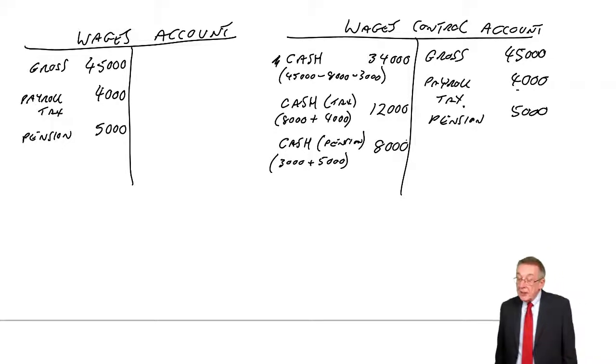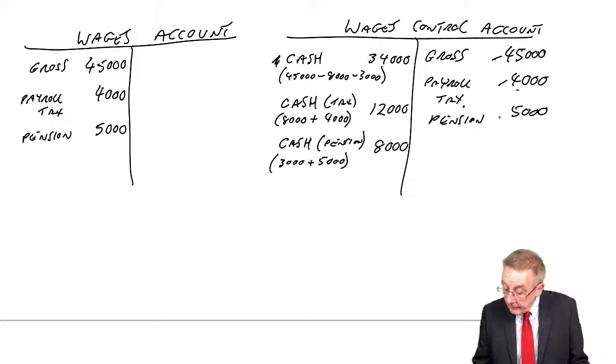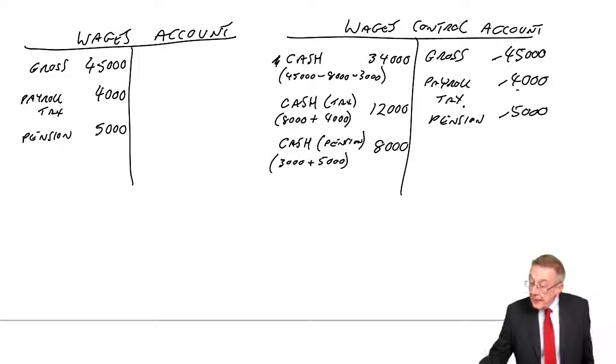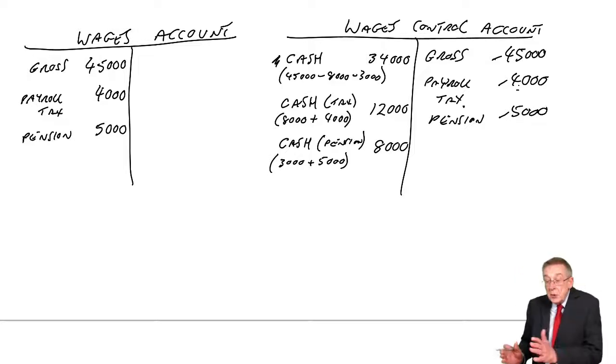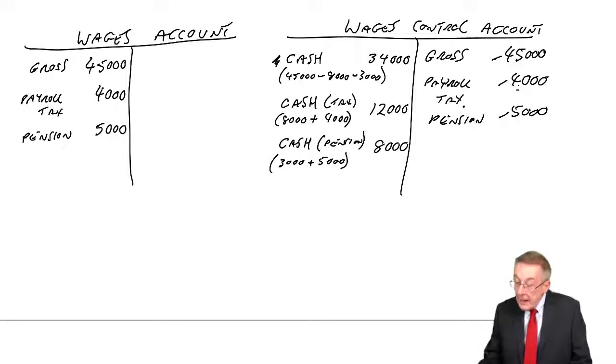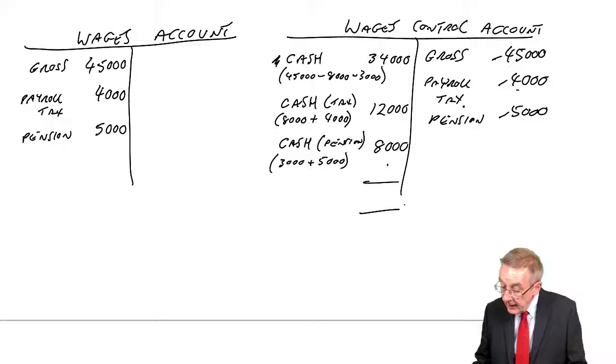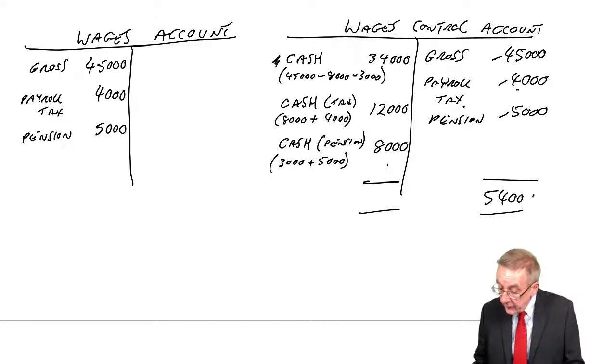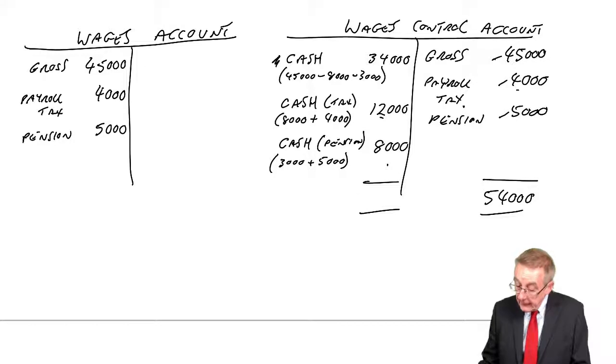If we look at the wages control account, the total cost is $54,000. But who's it being paid to? $34,000 has been paid to the employee. $12,000 to the tax people. $8,000 to the pension people. But it does balance. We're going to have to pay out $54,000 in total.